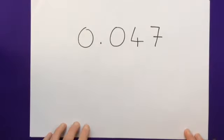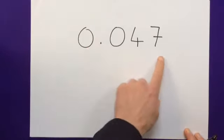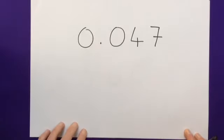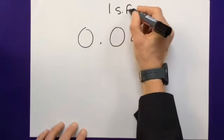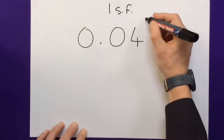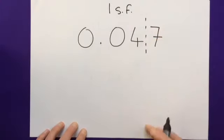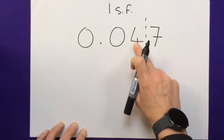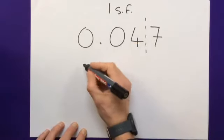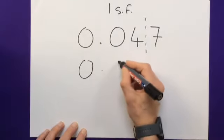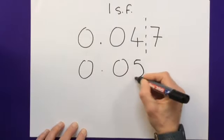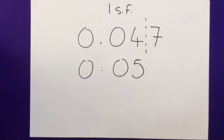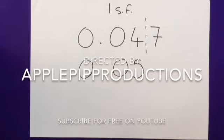So let's take 0.047 rounded to one significant figure. Well, this time my dotted line would go here. The seven, obviously greater than five, has an effect on the four. So to one significant figure, this would be 0.05. I hope that helps. Thank you.